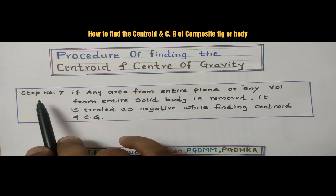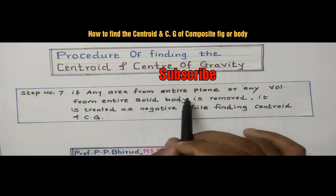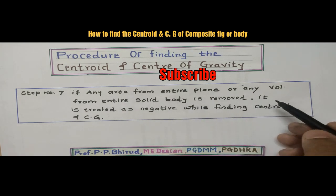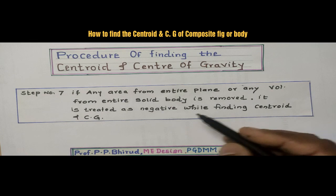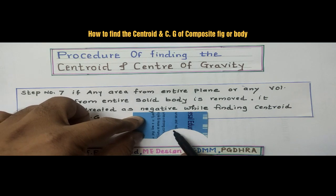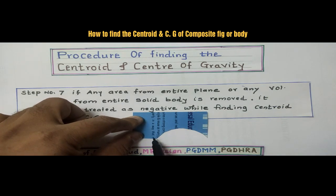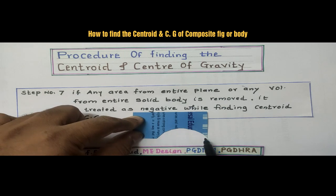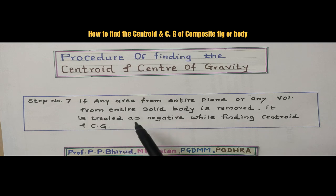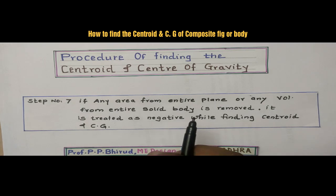And the last step, that is seven: if any area from the entire plane or any volume from the entire solid body is removed, it is treated as negative while finding the centroid or CG. So, in this figure, the semi-circle is removed from the rectangle, so we will subtract this area from the area of the rectangle. By using these seven steps, we can easily calculate the centroid and center of gravity for any composite figure or composite body.